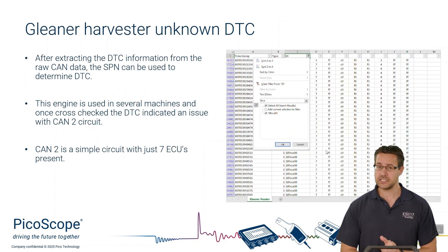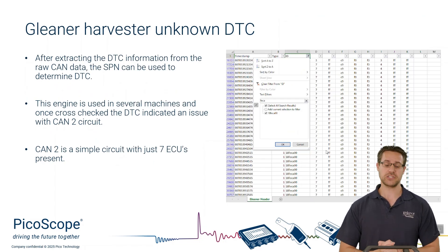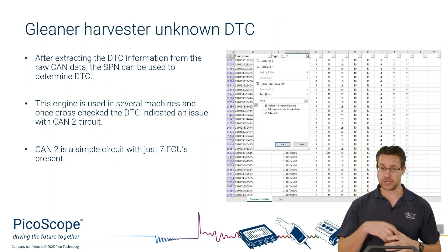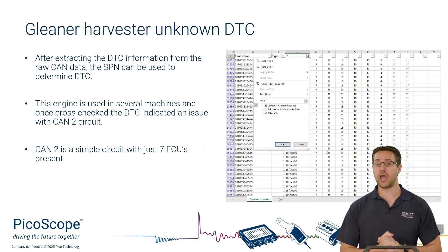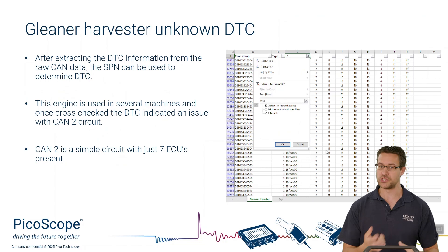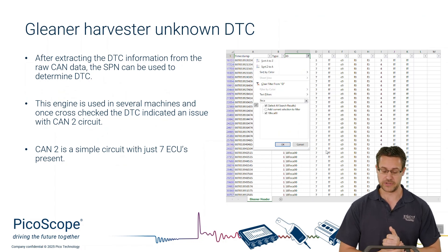The first thing our customer did here - running short on time - was to quickly go in with a CAN logger to pull some data out of the ECU or the CAN network. We have an unknown code and it's a U-code, so we assume it's something to do with communication. Very quickly, jump onto the network and see what information you can extract from it.